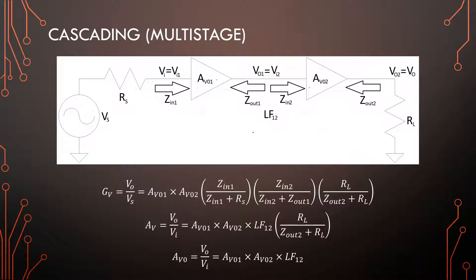The way you can adapt the equation is that the total gain is the gain of the first amplifier multiplied by the gain of the second amplifier, taking into account the loss happening in between — we call this loading factor 1-2. For more stages, you continue with loading factors 2-3, 3-4, and so on.